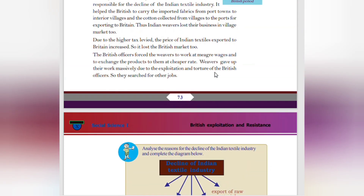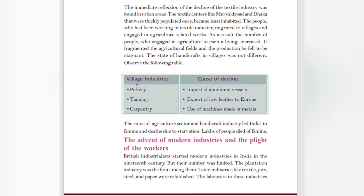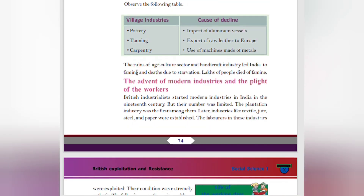The immediate reflection of the decline of the textile industry was found in urban areas. Textile centers like Murshidabad and Dhaka, once thickly populated, became least inhabited. People who had been working in textile industry migrated to villages and engaged in agriculture-related work. As a result, the number of people engaged in agriculture increased, fragmenting agricultural fields and causing production to stagnate. Village industries suffered similarly — pottery declined due to import of aluminum vessels; tanning declined due to export of raw leather to Europe; carpentry declined due to machine-made metal goods. The ruin of the agriculture sector and handicraft industry led India to famine and death by starvation — lakhs of people died of famine.